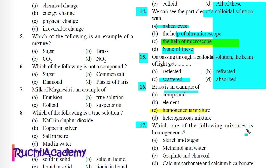Question 17: Which one of the following mixtures is homogeneous? A) Starch and sugar, B) Methanol and water, C) Graphite and charcoal, D) Calcium carbonate and calcium bicarbonate. Correct answer is B) Methanol and water, because a mixture of methanol (a liquid) and water (a liquid) is homogeneous.